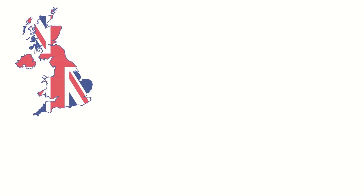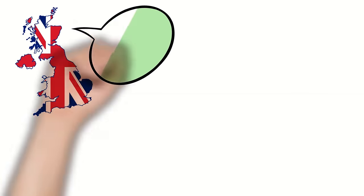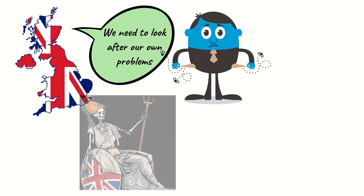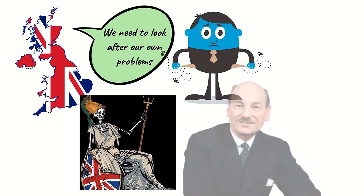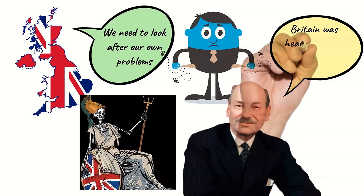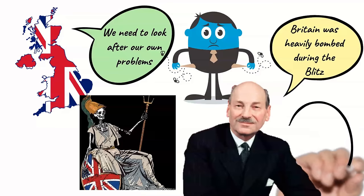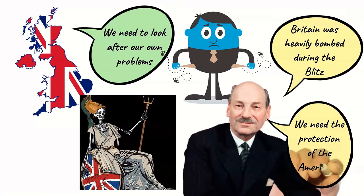Britain meanwhile was quietly bowing out as a major player in the world. The war had economically bankrupted them and the empire was collapsing. Attlee therefore needed to focus on the internal problems of Britain and did not want to get drawn into the tensions between the USA and the USSR. The bomb meant that he and other European nations felt more confident in placing themselves under the protection of the USA.